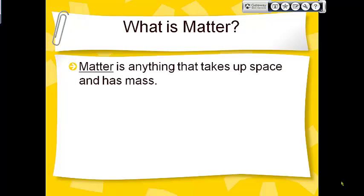Oxygen takes up space, even though you can't even see it — it's such a small amount of space. And it actually has mass; it has particles in it. So oxygen is considered to be matter. There are all kinds of things that are considered to be matter that we can't even see. If it takes up any space or has any mass, we call it matter.